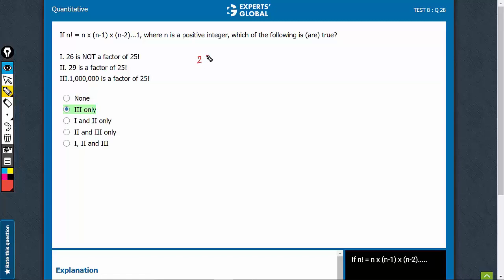25 factorial means 25 into 24 into 23 until 1. So of course there would be a 13 somewhere, there would be a 2 somewhere, so 26 is going to be a factor of 25. So this statement is false.